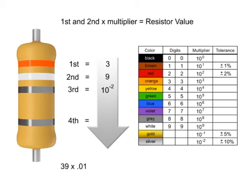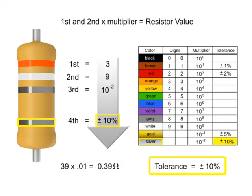Thus, the value of this resistor is .39 ohms with a tolerance of plus or minus 10%.